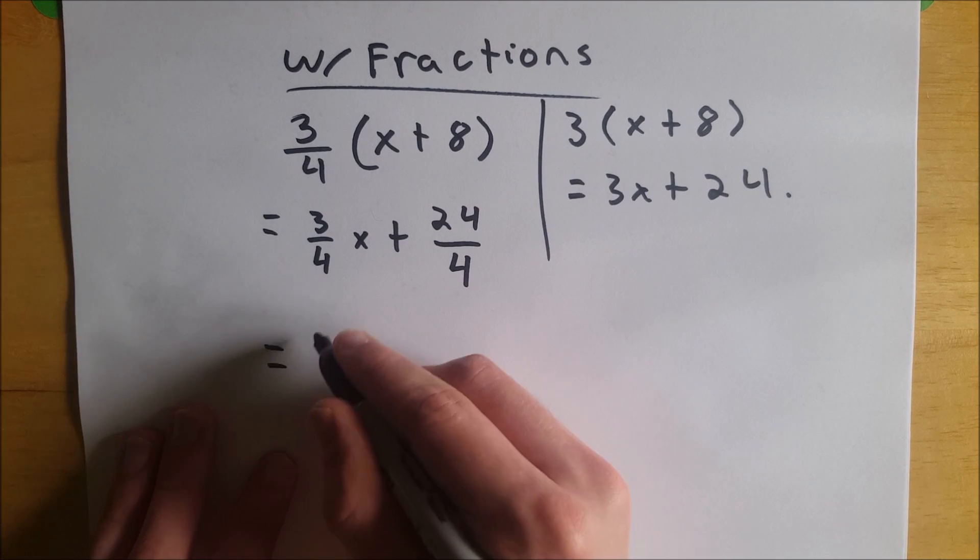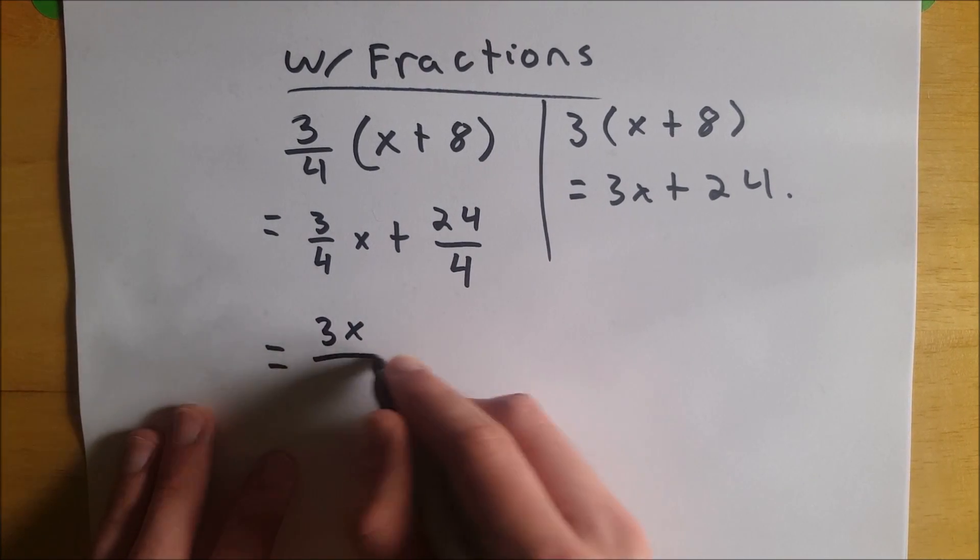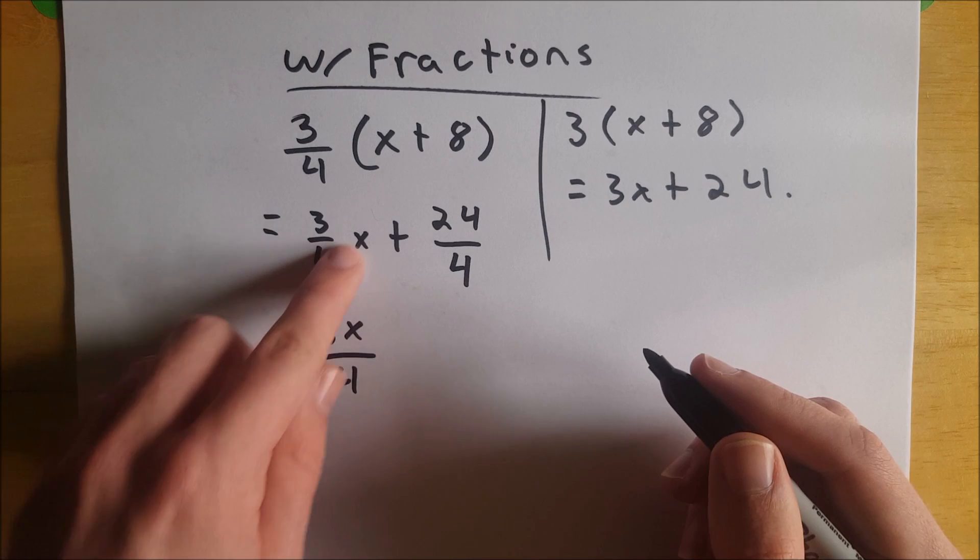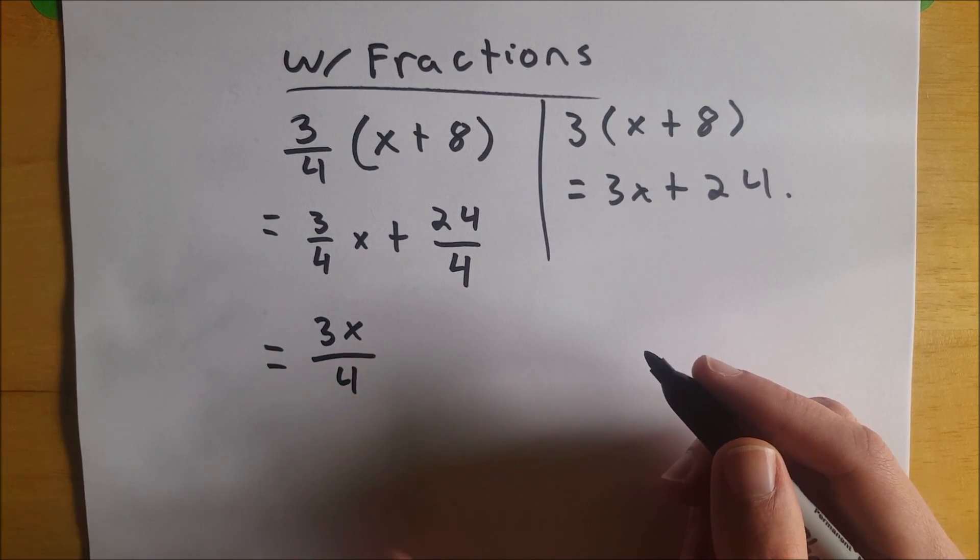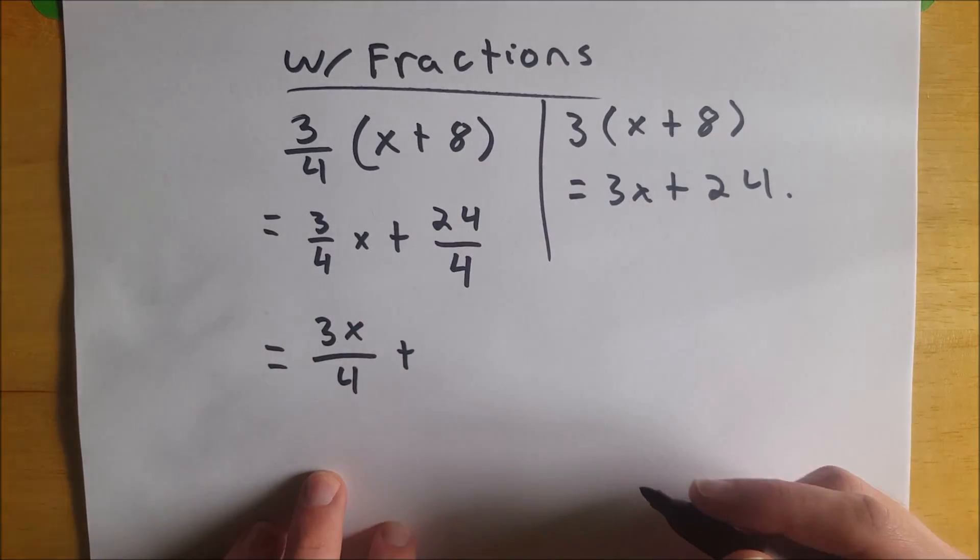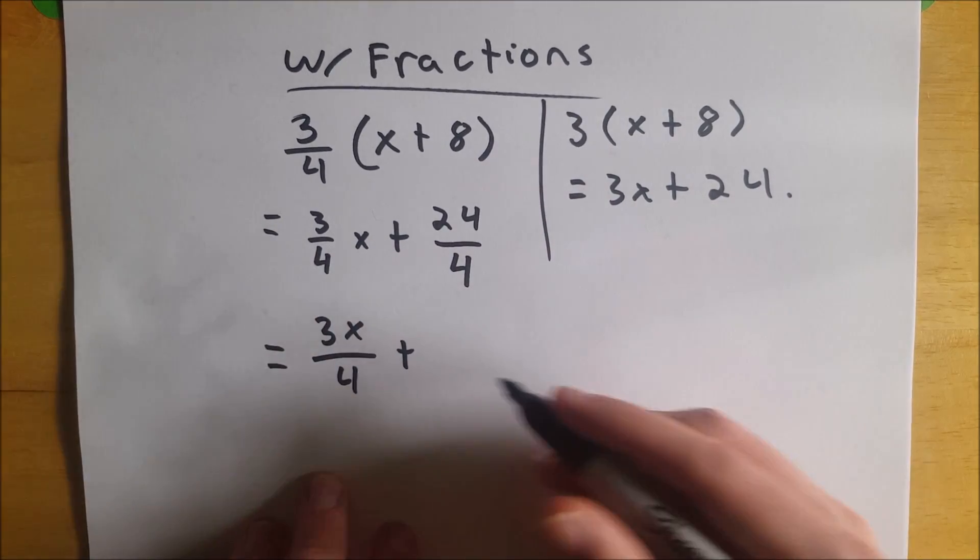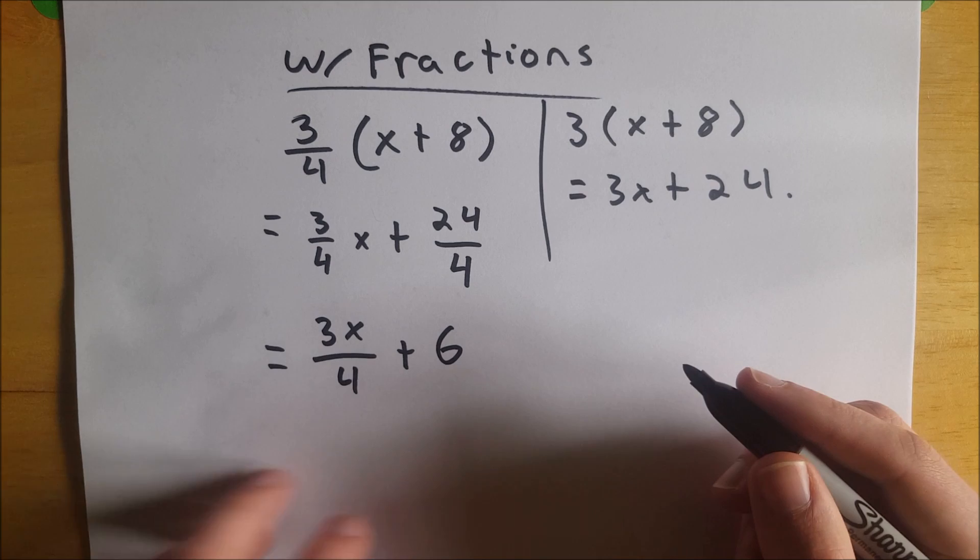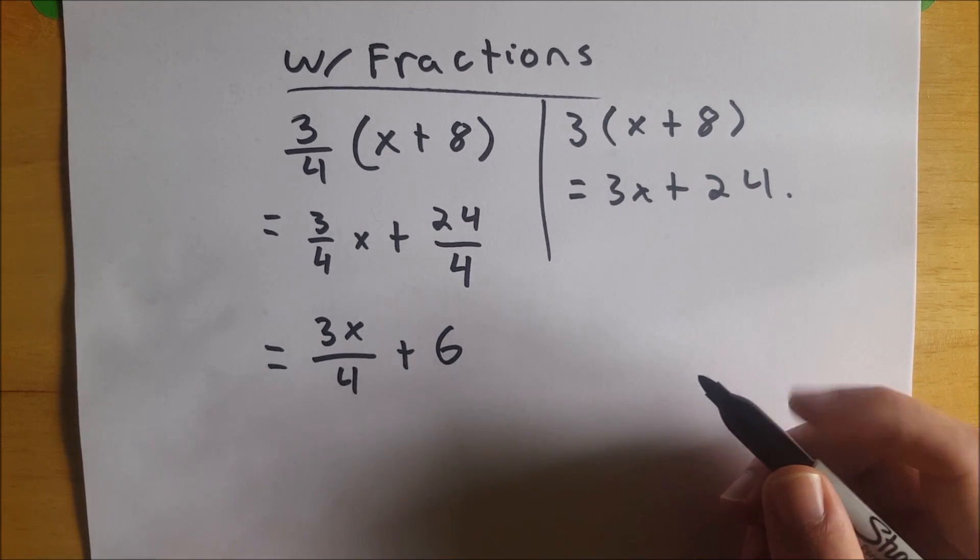Now, I would rewrite this as 3x all divided by 4. Some people prefer to write it like this. I prefer to write it like this. Totally up to you. This, on the other hand, you should definitely simplify no matter who you are. 24 divided by 4 is 6, so we can replace that with 6, and we are well on our way.